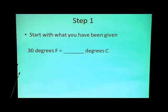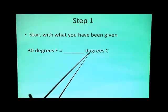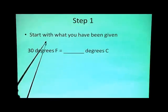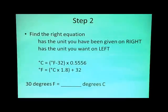So let's start with the problem that we have. Let's say 30 degrees Fahrenheit, I want you to convert that to degrees Celsius. Start with what you have. What do you have? You have degrees Fahrenheit. Then you're going to find the right equation. Which means, if you have degrees Fahrenheit, then this is what you want.